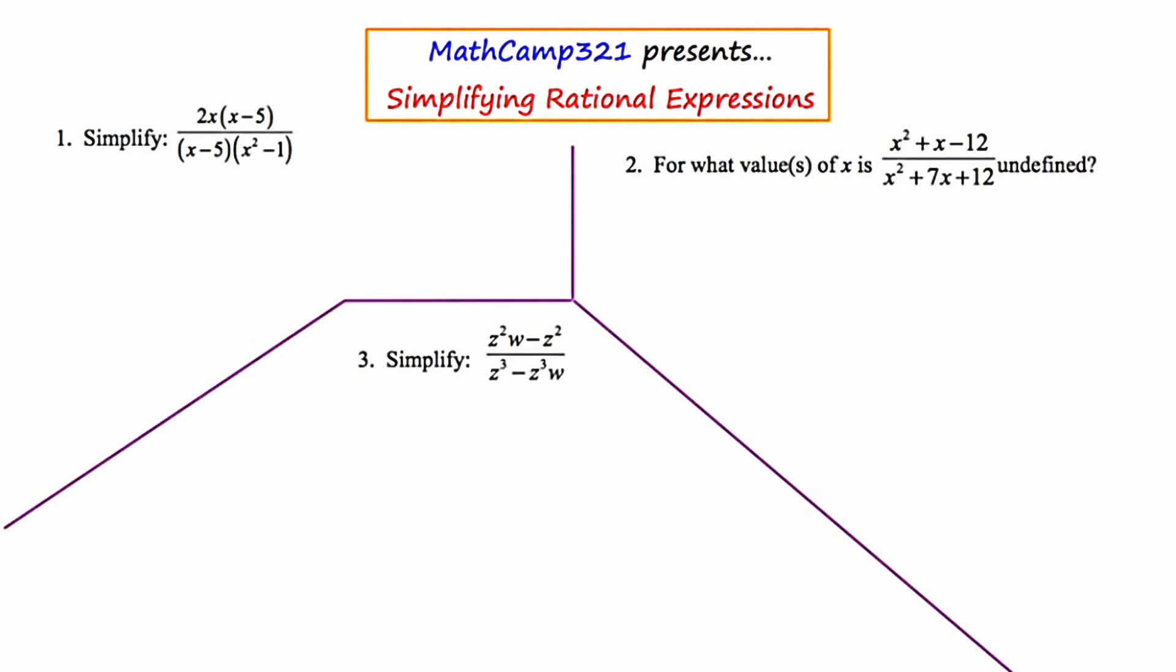You want to see if there's any factors that are common to the top and the bottom that can be cancelled out. As I scan number one, I notice that there is an x minus 5 binomial present in both the numerator and the denominator. So I'm going to go ahead and cancel those out.